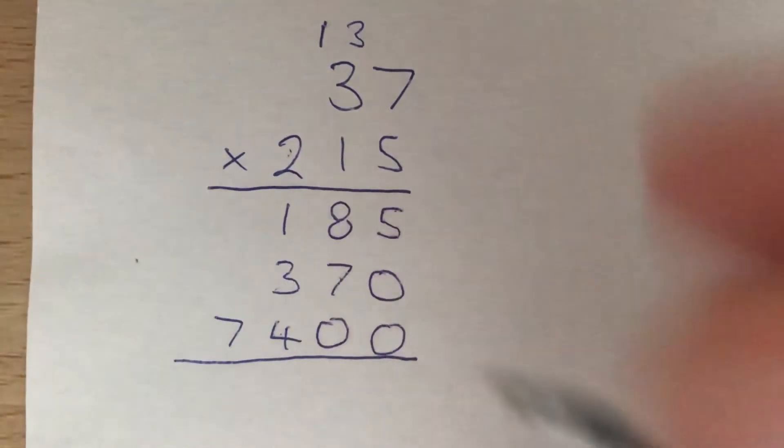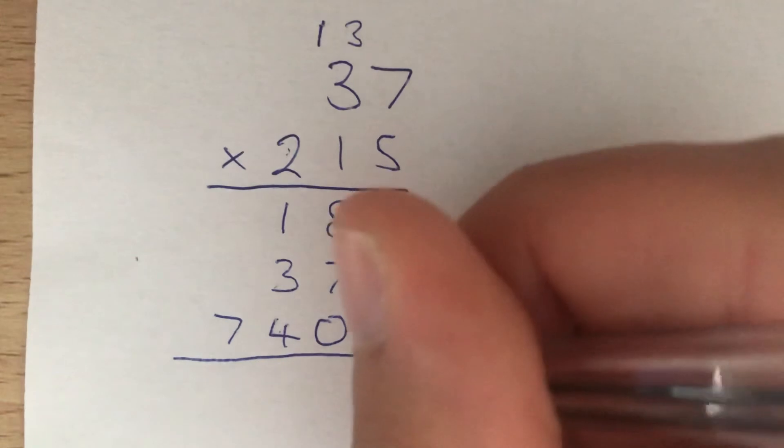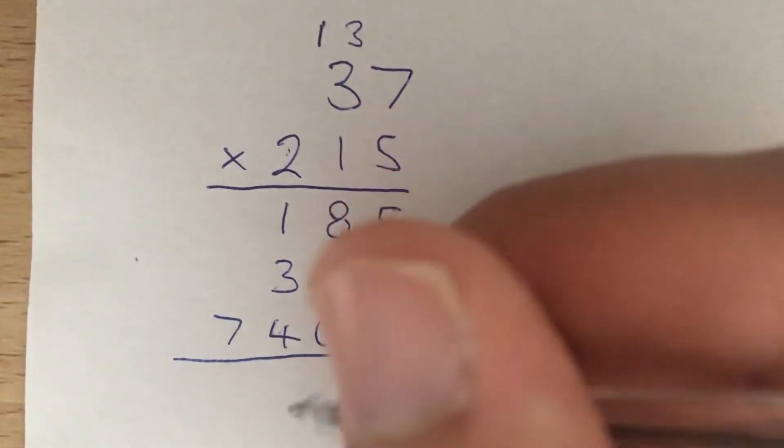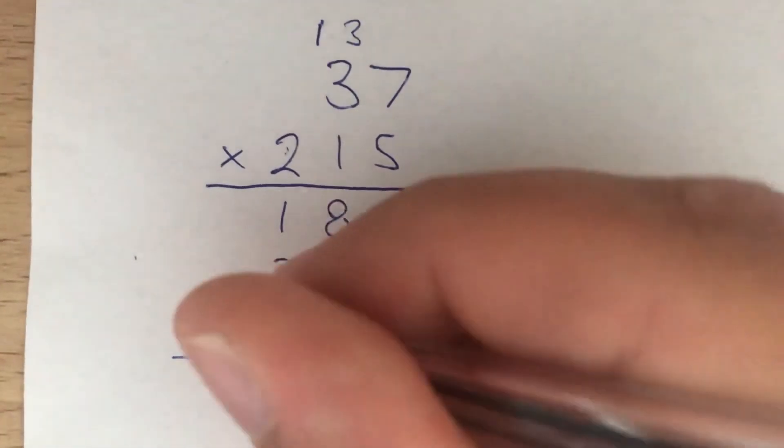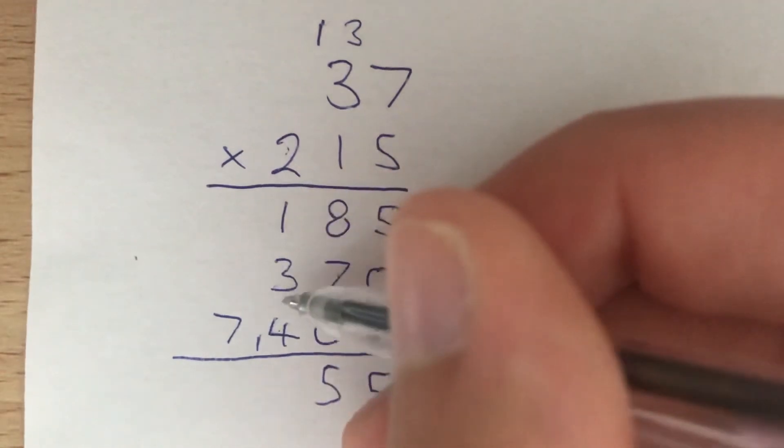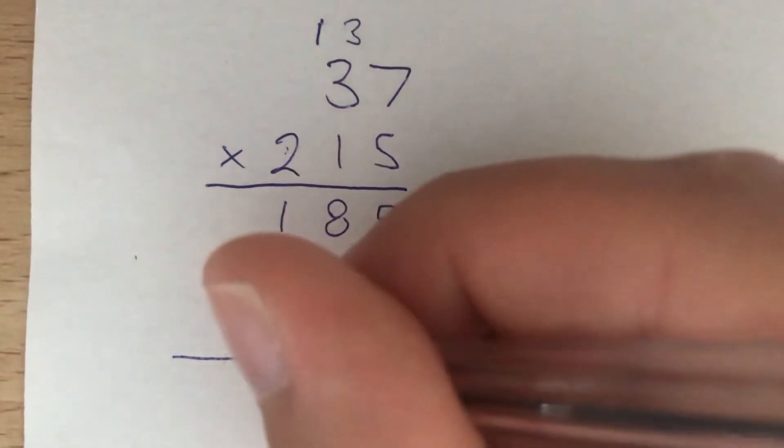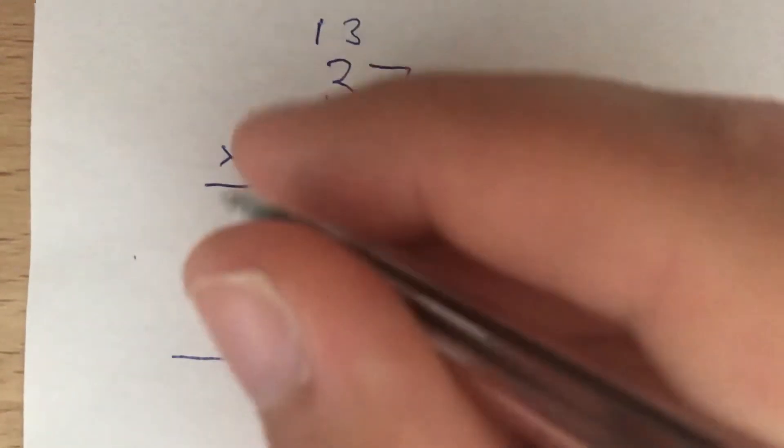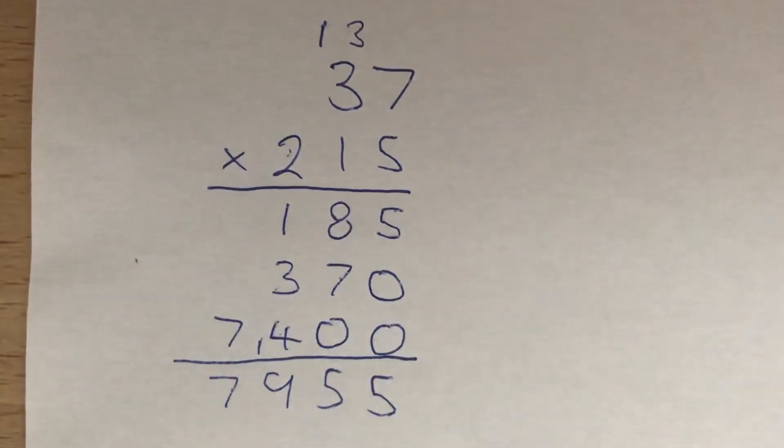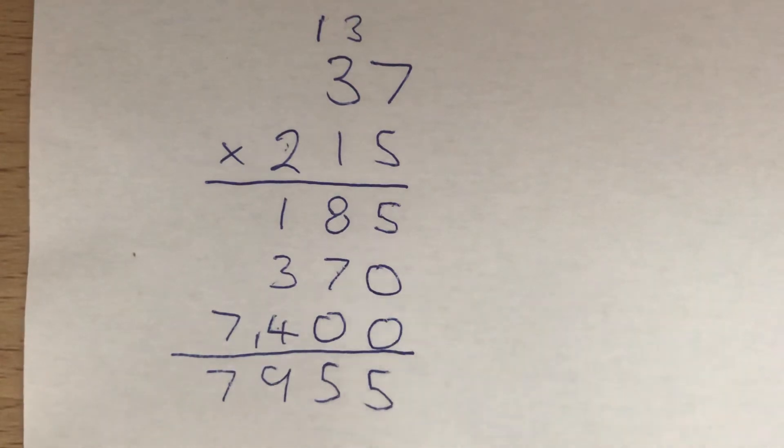Now we add these 3 numbers up. 5 add 0 add 0 gives us 5. 8 add 7 add 0 gives us 15, so we carry the 1. 1 add 3 gives us 4, add another 4 is 8, add the carried 1 gives us 9. And 7 stays as 7. So the answer is 7,955.